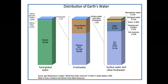This is the distribution of Earth's water — mainly from oceans, glaciers and ice caps, ice and snow, freshwater, surface water, atmospheric water, biological water, rivers, swamps and marshes, and soil moisture.